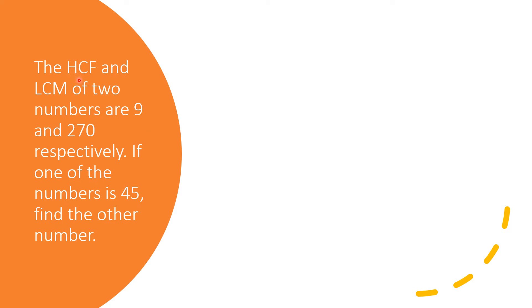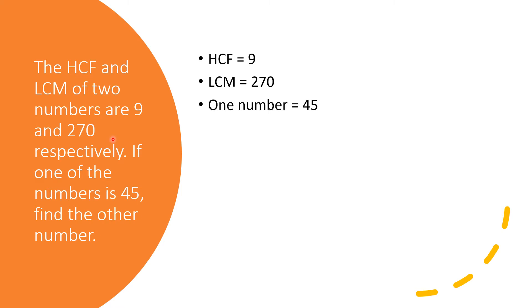Next example: the HCF and LCM of two numbers are 9 and 270. HCF = 9, LCM = 270. One of the numbers is 45. We have to find the other number.